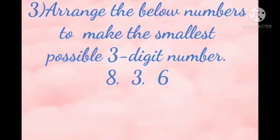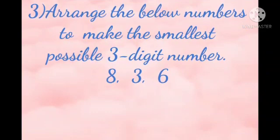Now, number 3. Arrange the below numbers to make the smallest possible 3-digit number. So, for making the smallest number, we will arrange the digits from hundreds, then tens, and then ones.